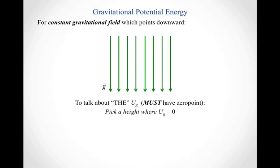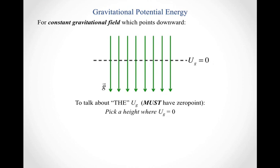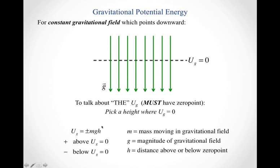We often talk about the gravitational potential energy, and what we really mean is the gravitational potential energy relative to the point where it equals zero. It's a long phrase — we never say it, but it's what we always mean. When you're talking about gravitational potential energy, you always mean it relative to a zero point. In a situation with a constant gravitational field, we get to pick where the gravitational potential energy equals zero. I might say I'm going to let this height be where gravitational potential energy equals zero, and then use plus or minus based on whether my object is above or below that chosen height.